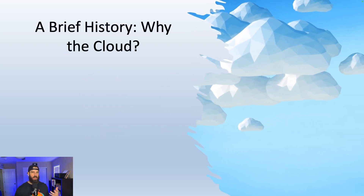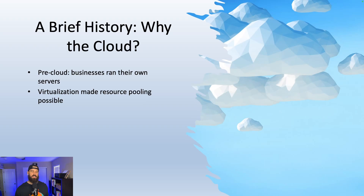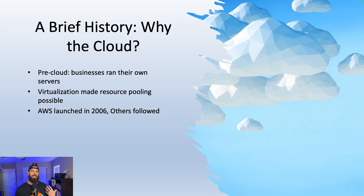Let's take a look at how the cloud got its start. In the early 2000s, businesses were stuck managing their own servers, which was expensive and really slow to scale. Then along came virtualization, which made it possible to run multiple systems on a single machine — a much more efficient use of hardware. In 2006, AWS changed the game by introducing their Elastic Compute Cloud, or EC2 service, which let developers rent computing power like a utility. Today, the cloud powers everything from AI and machine learning to global video streaming and e-commerce.